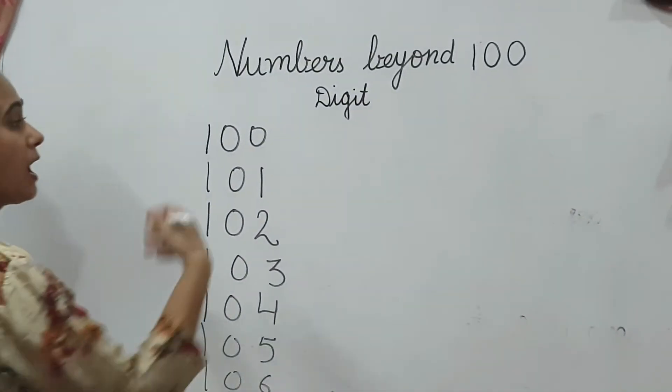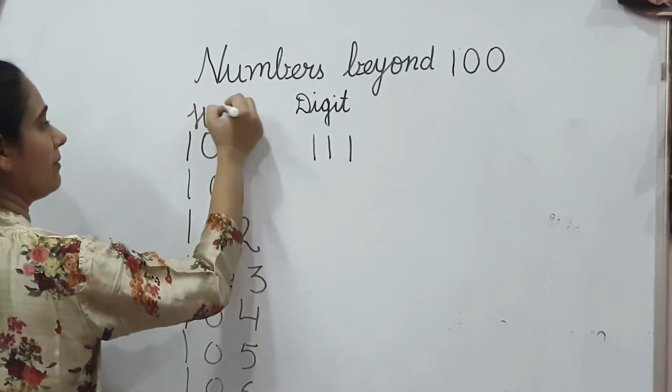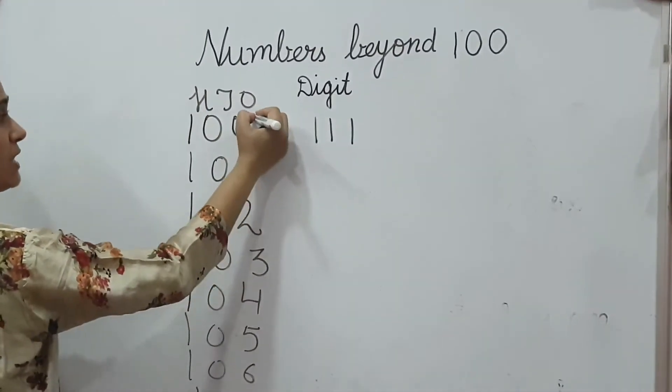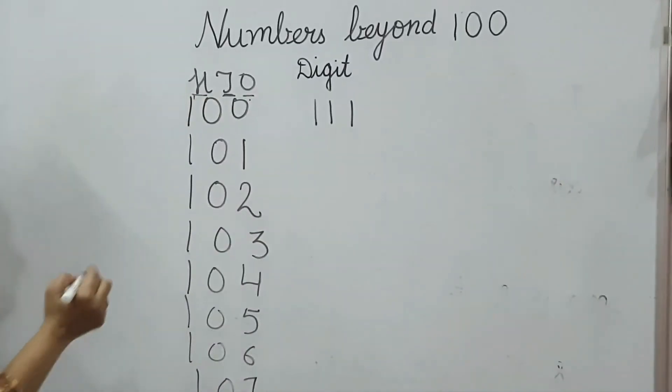110. How to write 111? 1, 1, 1. 111. 1's place, 10's place, 100's place.